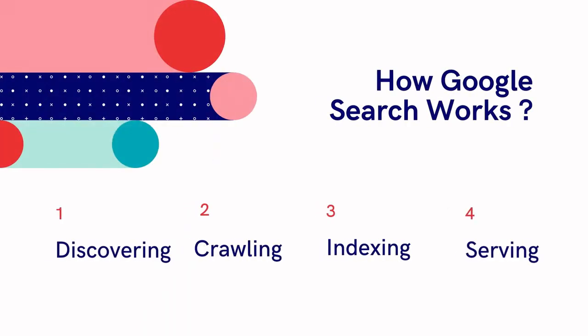It tries to understand what the page is about and decides where the page can appear in search results. After crawling, the next step is indexing. After analyzing what the page is about, it stores the information in the Google index, which is a huge database. The last part is serving — when a user types a search query, the search engine finds the answer from the information stored in its index, based on many ranking factors. That is the short version of how Google Search works.